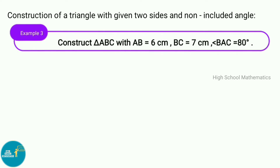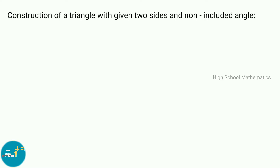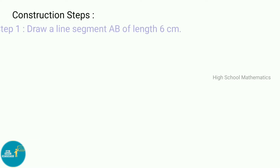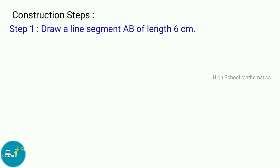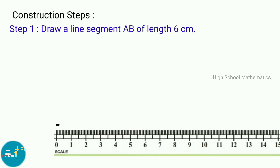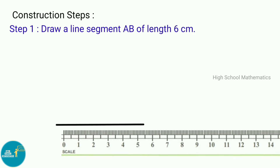Construction of a triangle with given two sides and non-included angle. Example 3: Construct triangle ABC with AB equal to 6 centimeters, BC equal to 7 centimeters, and angle BAC equal to 80 degrees.